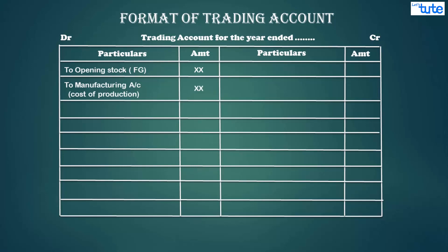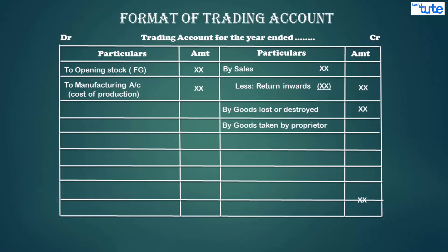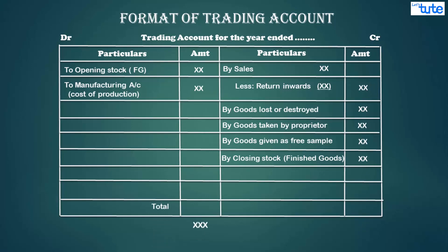Moving on to the credit side, we have net sales of finished goods — that is, sales less sales returns — which can be displayed in the trading account if given in the trial balance. Under other goods accounts, we have goods lost by fire, goods withdrawn by proprietor, and goods distributed as free samples. These accounts record the cost of finished goods lost, withdrawn, or distributed, and since they show credit balances, they are transferred to the credit side. The last item on the credit side is closing stock of finished goods.